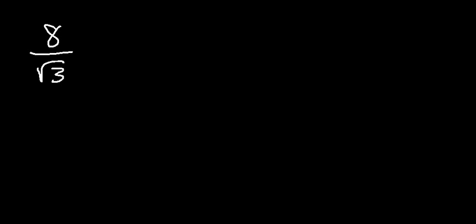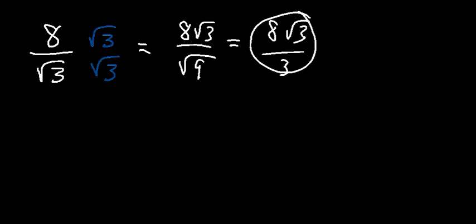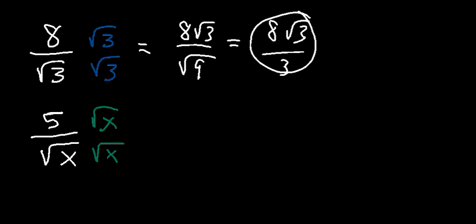Let's say you have 8 divided by the square root of 3 and want to simplify it. You need to rationalize the denominator. Multiply top and bottom by the square root of 3. You get 8 root 3 divided by root 9. Since 3 times 3 is 9 and the square root of 9 is 3, the answer is 8 root 3 over 3. For 5 divided by the square root of x, multiply top and bottom by root x to get 5 root x over x.